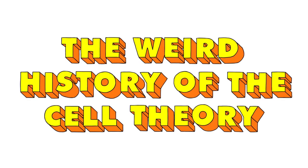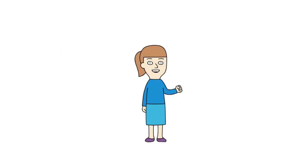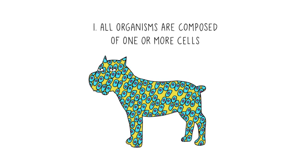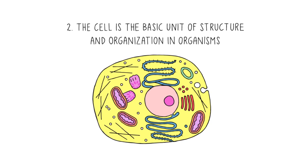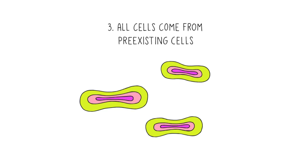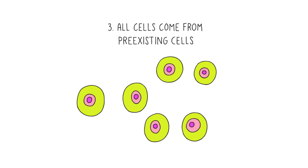The Weird History of the Cell Theory. There are three parts to the cell theory. One, all organisms are composed of one or more cells. Two, the cell is the basic unit of structure and organization in organisms. And three, all cells come from pre-existing cells.